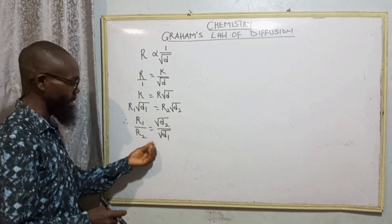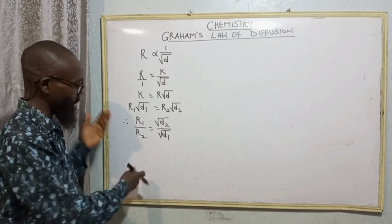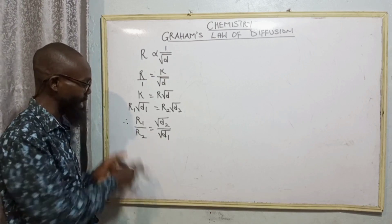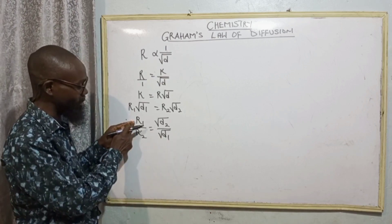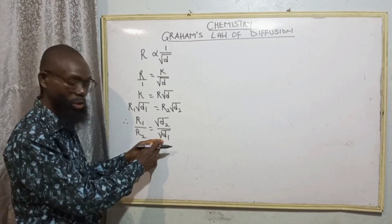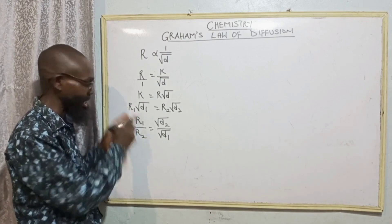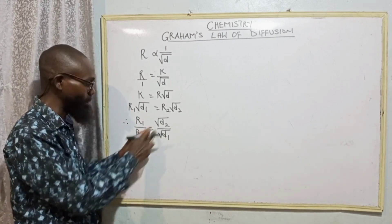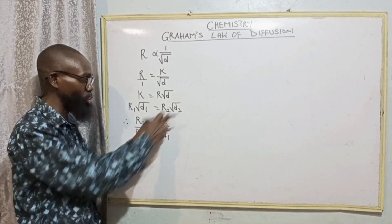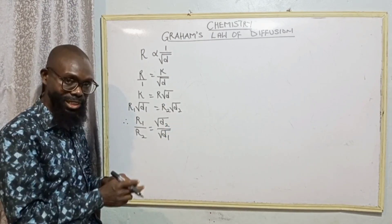From here, when you cross multiply, R1 will come and meet square root of D1 to get to this stage. R2 will remain with square root of D2 to get to this stage.